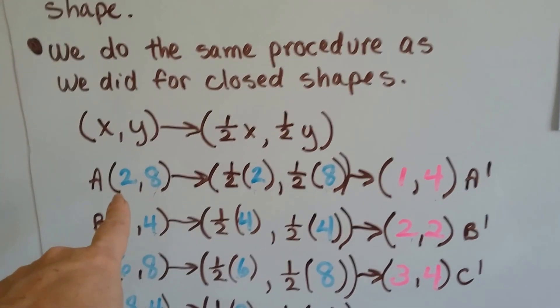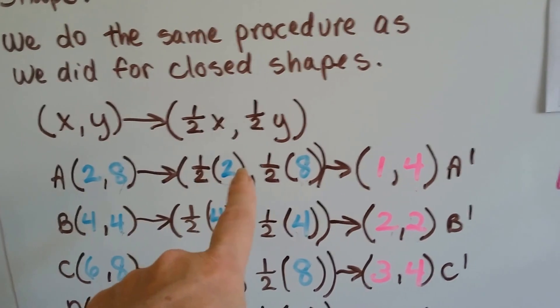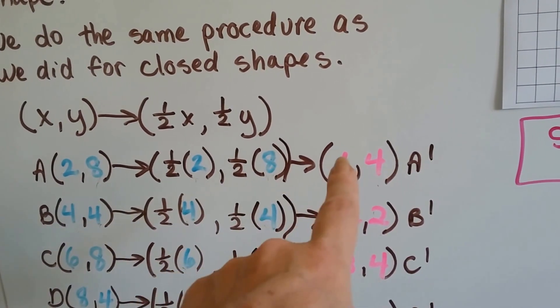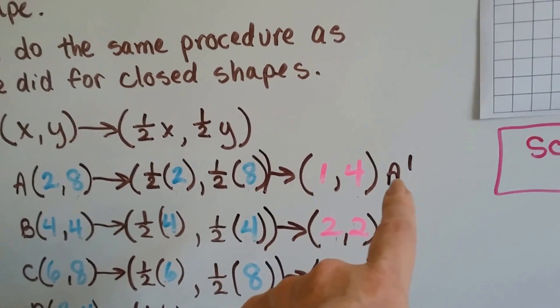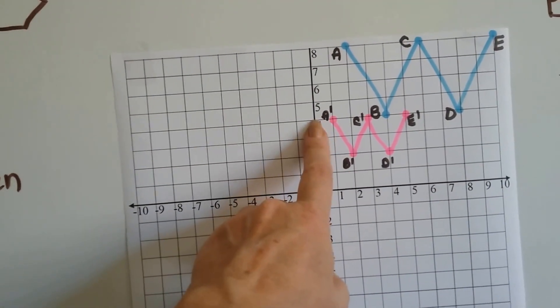We're going to multiply that by a half, so the 2 is going to be cut in half and the 8 is going to be cut in half. So, half times 2 and half times 8 becomes a 1 and a 4 for A prime. So, we plot that 1 and the 4. Now we've got A prime.